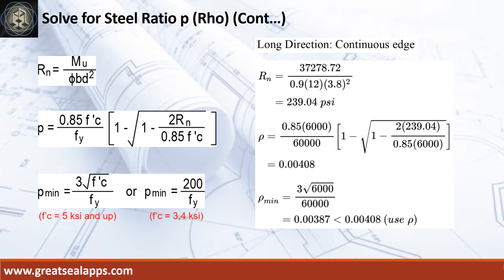Given long direction, continuous edge moment equals 37,278.72 inch-pounds. Resistance factor equals 0.9, b equals 12 inches, and d equals 3.8 inches. The beam design ratio RN equals 239.04 PSI and reinforcement ratio rho equals 0.00408.